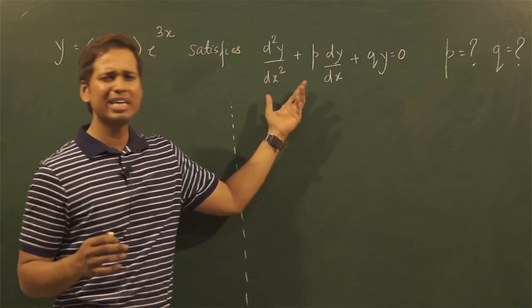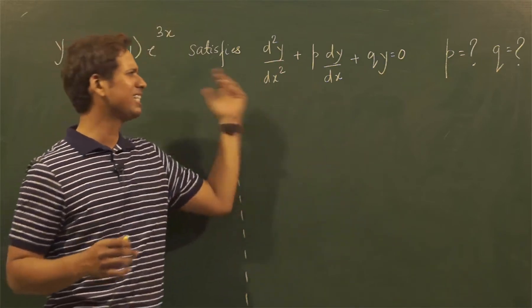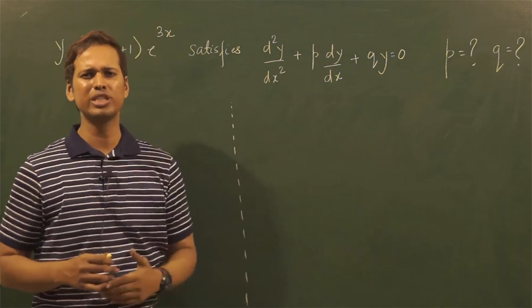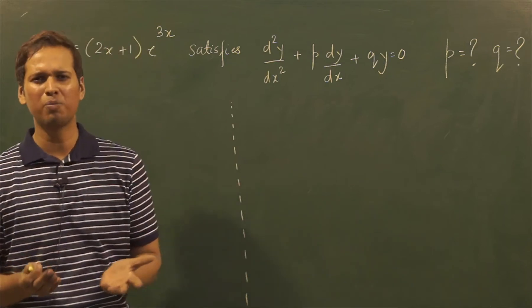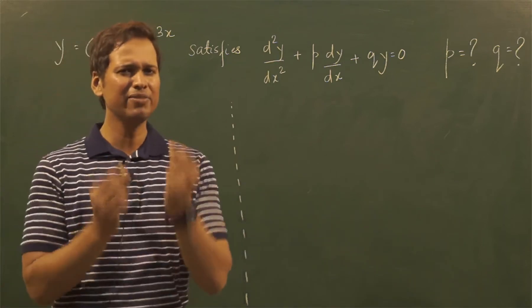They have found dy/dx, they have found d²y/dx² and tried to substitute it and get it to zero, and as a result they all got muddled up. I'll show you a very simple way to solve this problem.